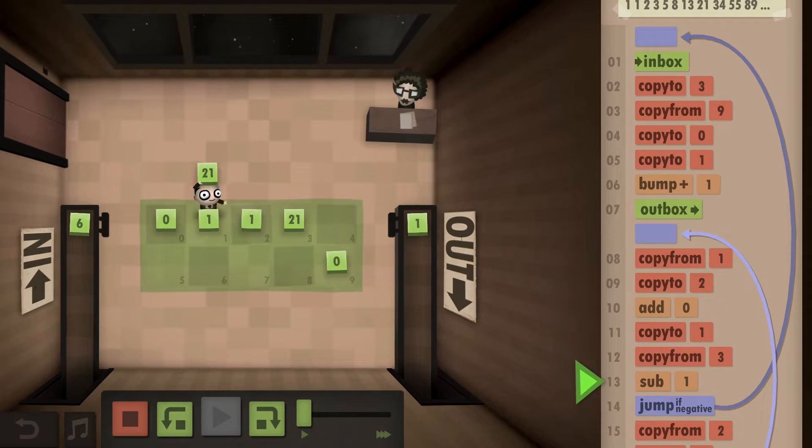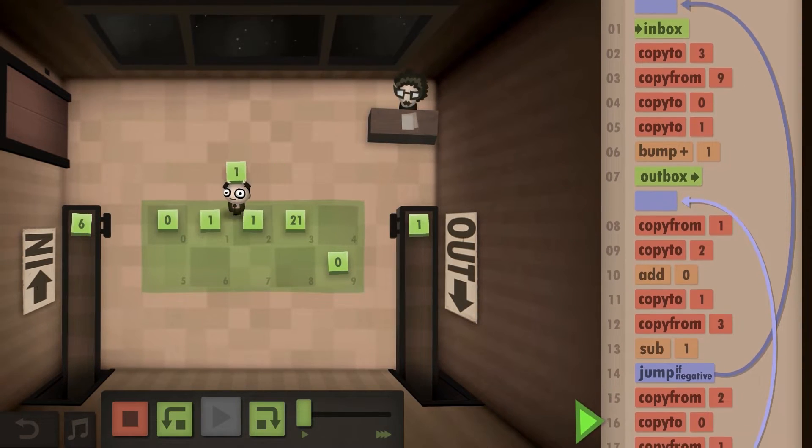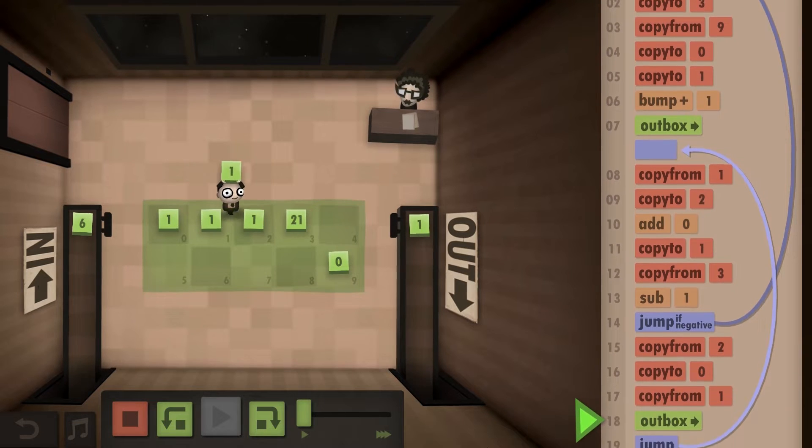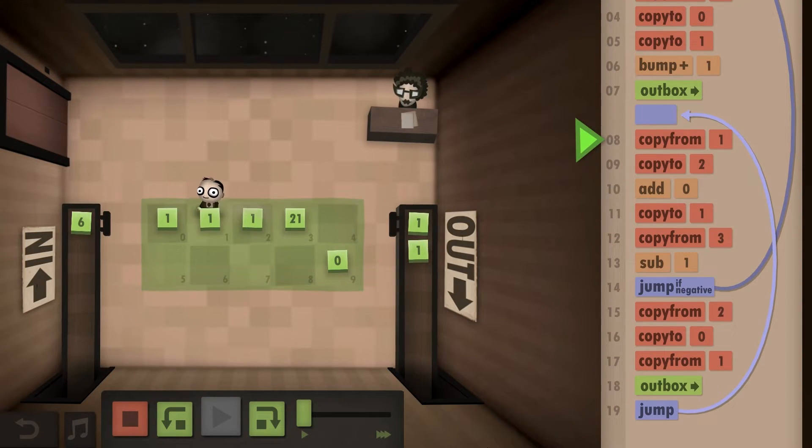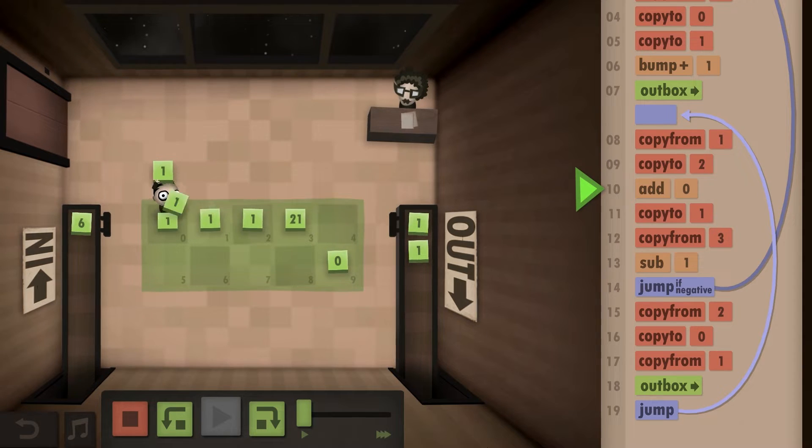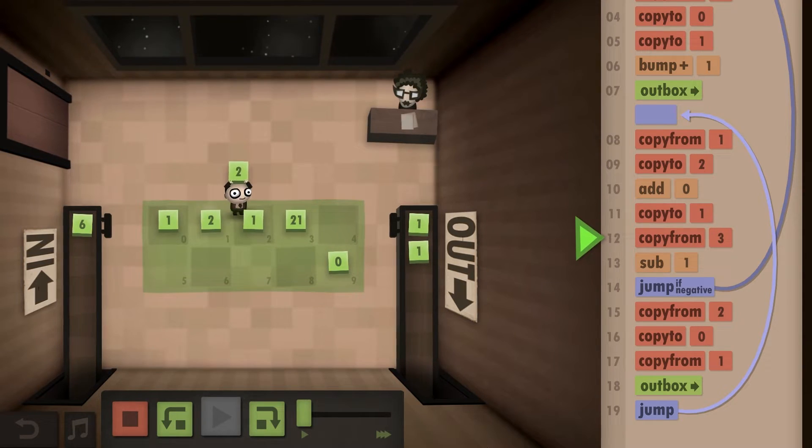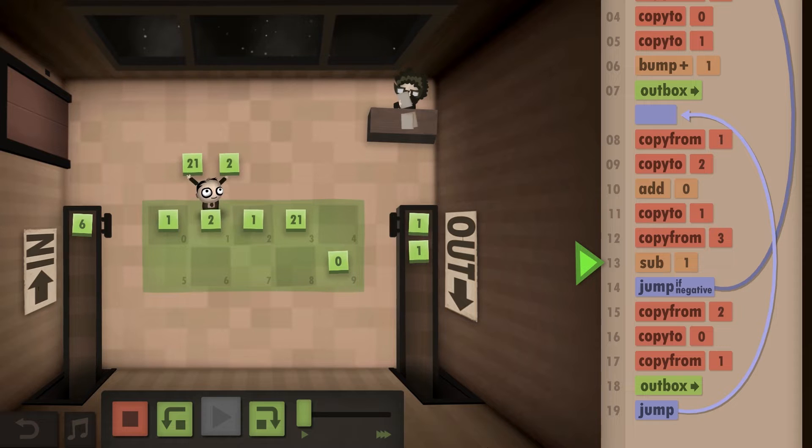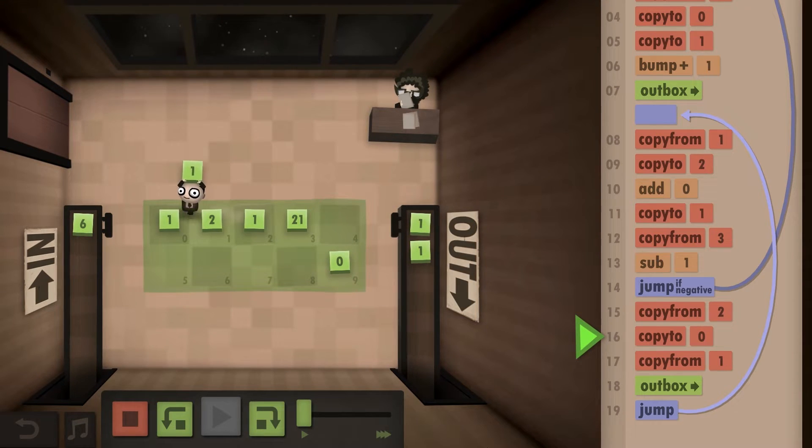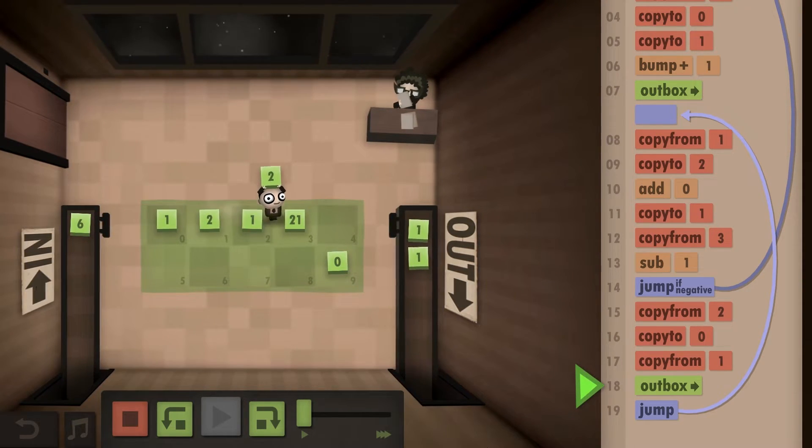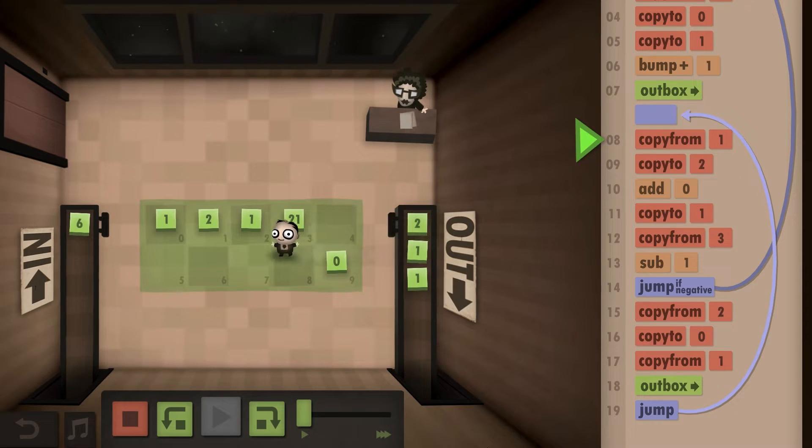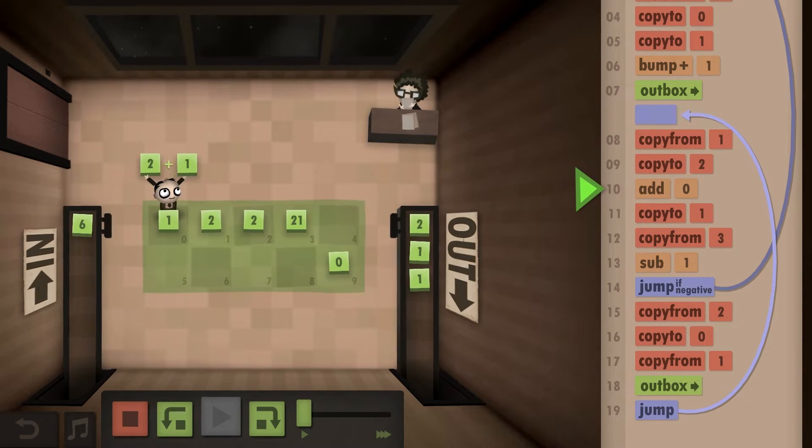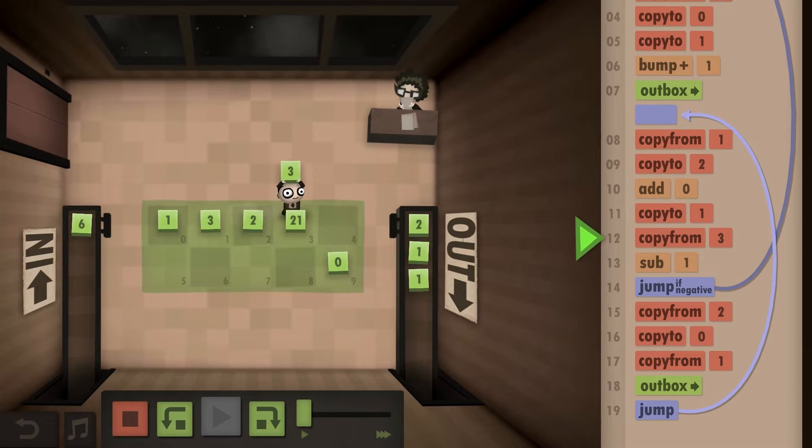First, let's start with a short definition. Fibonacci numbers are basically a sequence where the first two numbers are either one-one or sometimes it starts with zero-one—that's usually a preference that doesn't matter. Each subsequent number is the sum of the previous two numbers.